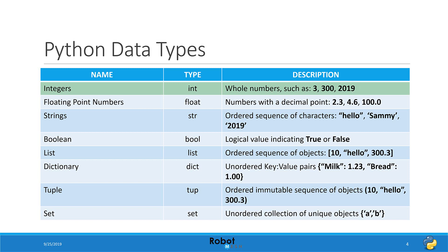So let's quickly go through these. We start off with integers, and these are just basic whole numbers, such as 3, 300, 2019.